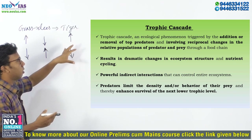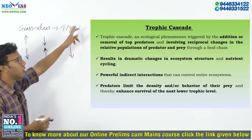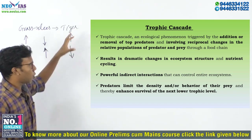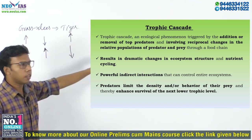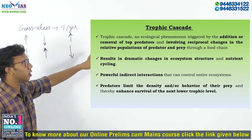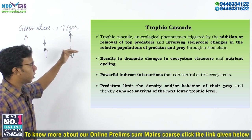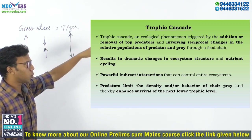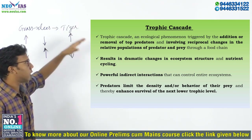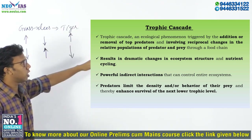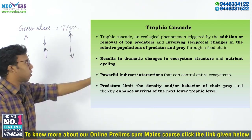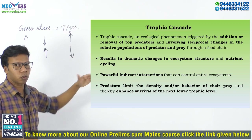The Trophic Cascade was triggered by the addition or removal of a species. Trophic Cascade is an ecological phenomenon triggered by the addition or removal of top predators, which involves reciprocal changes in the relative populations of predator and prey through a food chain. This entire process will result in dramatic changes in the ecosystem structure and nutrient cycle.